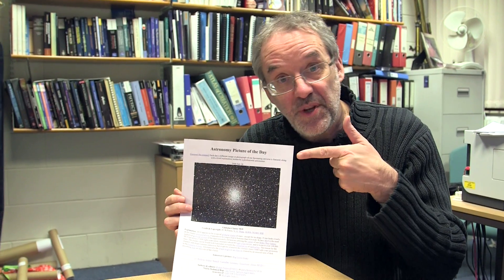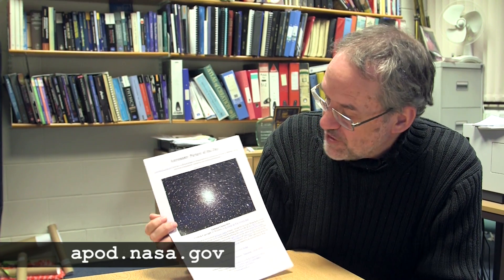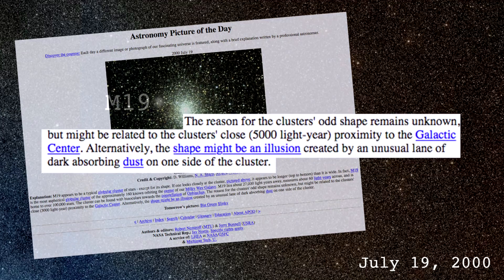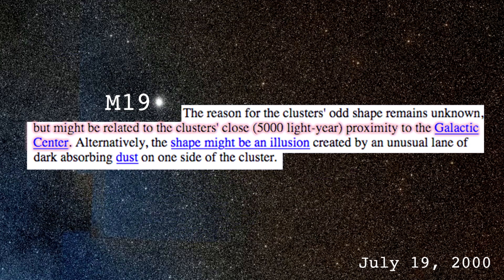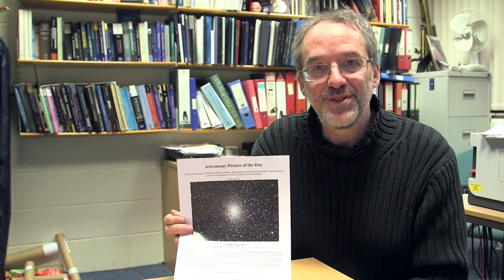This is the Astronomy Picture of the Day from 2000 — if you've never been to Astronomy Picture of the Day, it's well worth a look. It has a description that says the reason for the cluster's odd shape remains unknown, but might be related to the cluster's close proximity to the galactic center. Alternatively, the shape might be an illusion created by an unusual lane of dark absorbing dust on one side of the cluster. This was 2000, and we now think none of those explanations are correct.